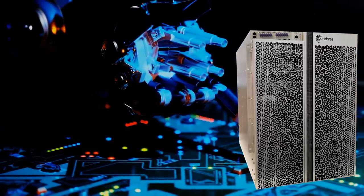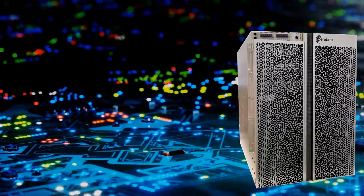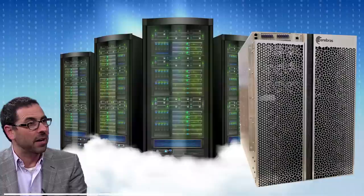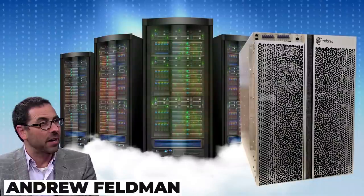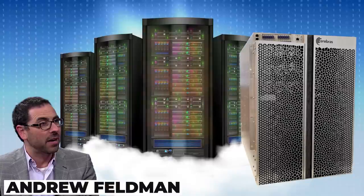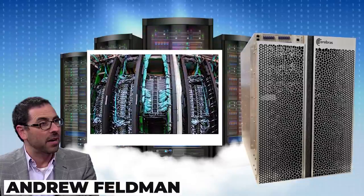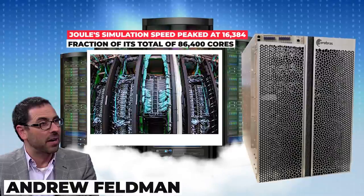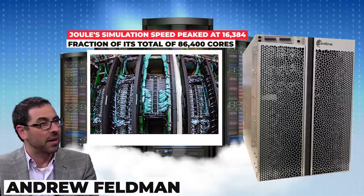Researchers said that the performance of the CS-1 could not match any number of CPUs and GPUs. And CEO and co-founder Andrew Feldman said VentureBeat would be true no matter how big a supercomputer is. At one point, scaling a supercomputer like Joule doesn't produce any better results in this kind of problem. That's why Joule's simulation speed peaked at 16,384 cores, a fraction of its total of 86,400 cores.